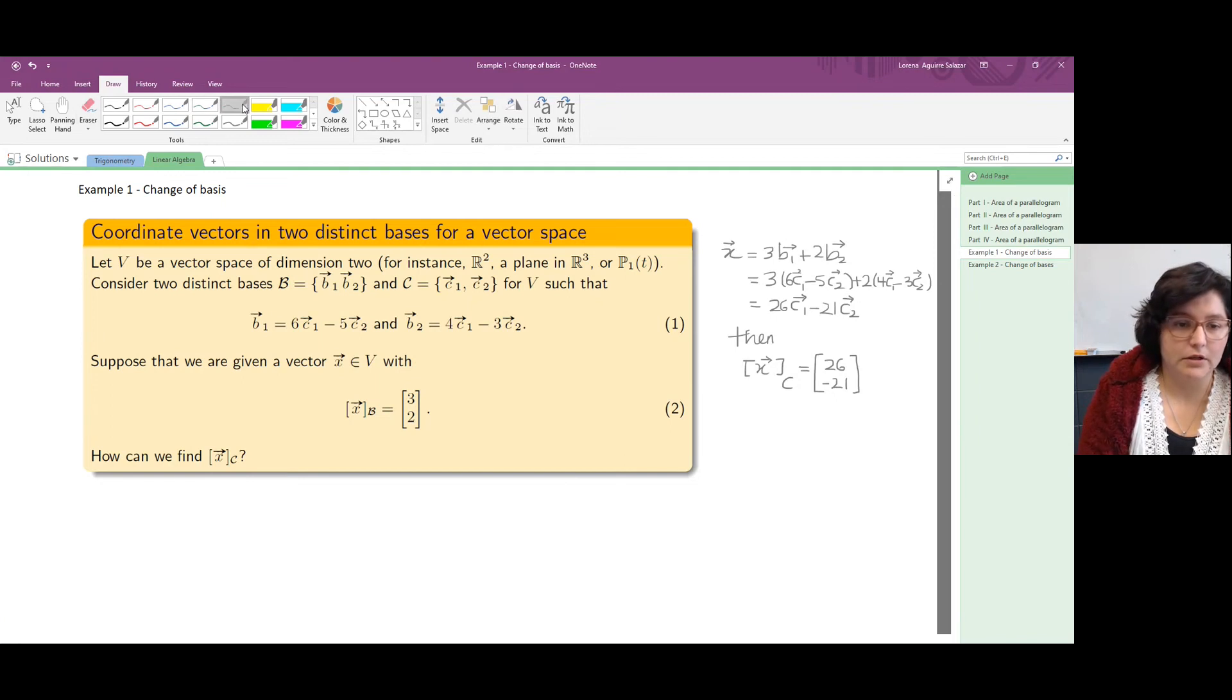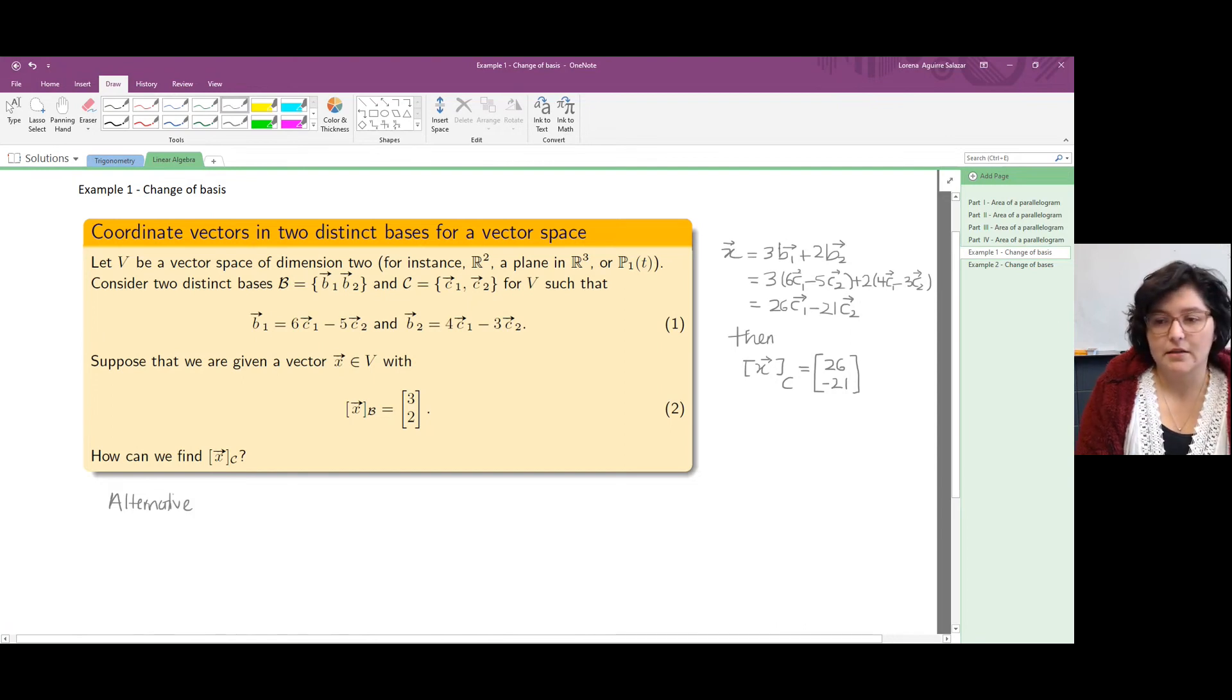Now, I want to notice that there is an alternative reasoning. When we write X in terms of B1 and B2 and then write B1 and B2 in terms of C1 and C2, we're changing bases.